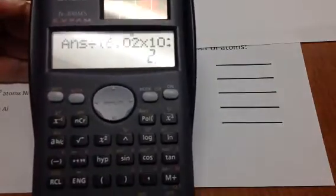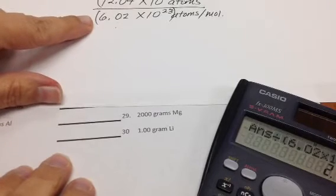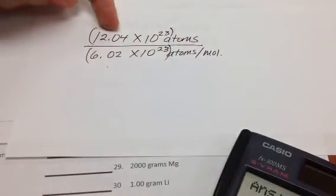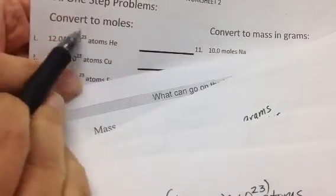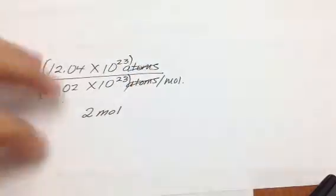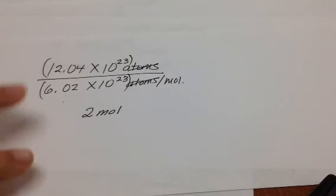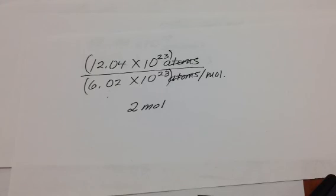So the answer to this problem is going to be, when I'm converting atoms, how many atoms to moles, the answer will be 2, and the unit will be moles because that's what they asked me to convert it to. That also is what happens when the atoms unit portion crosses out, then I'm only left with my moles. So this is how to solve a one-step conversion problem.